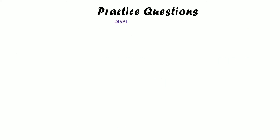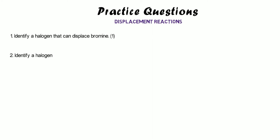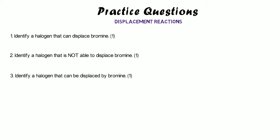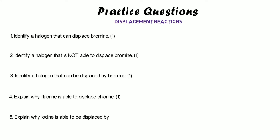Here are some practice questions on this, figuring out which elements could displace another element or be displaced by another element. Number one: identify a halogen that can displace bromine. Number two: identify a halogen that cannot displace bromine. Number three: identify a halogen that could be displaced by bromine. Number four: explain why fluorine is able to displace chlorine. And finally: explain why iodine is able to be displaced by chlorine.